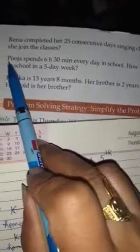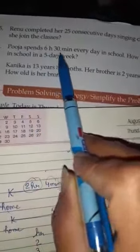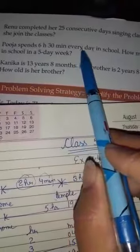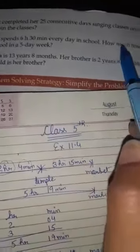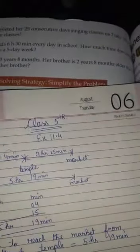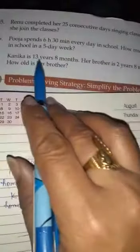Next is the sixth word problem. Pooja spends 6 hours 30 minutes every day in school. How much time did she spend in school in 5 days a week?